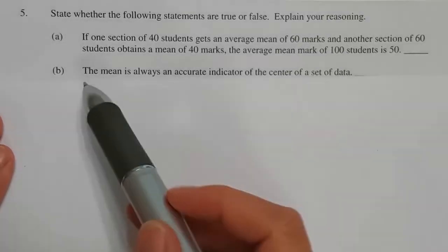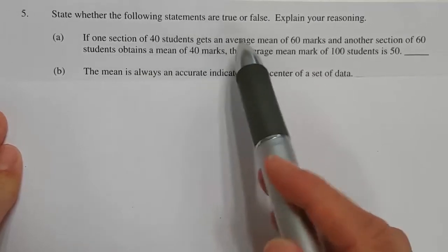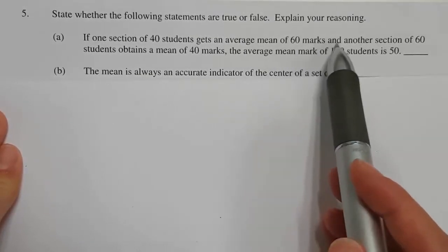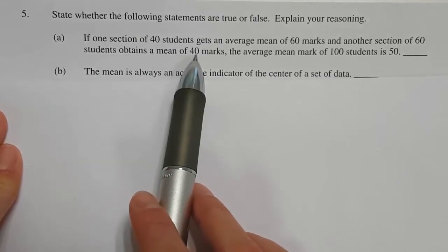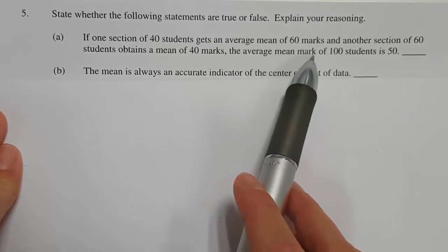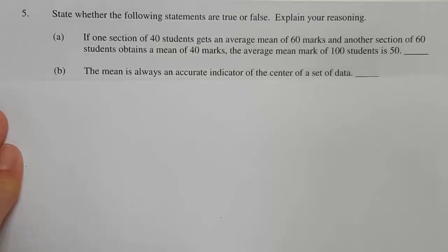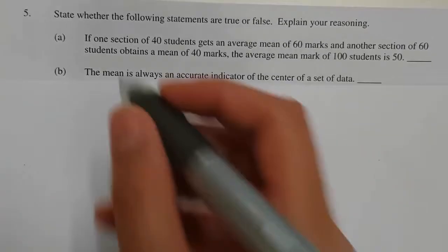I love questions like this. True or false: if one section of 40 students gets an average mean of 60 marks and another section of 60 students obtains a mean of 40 marks, the average mean mark of 100 students is 50. So is this true or false? Well, let's calculate.